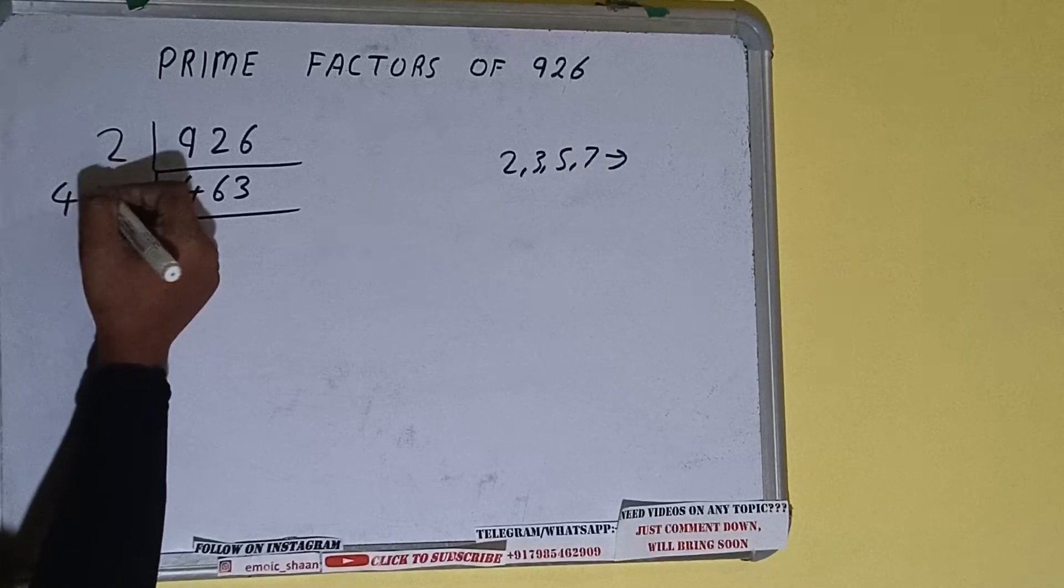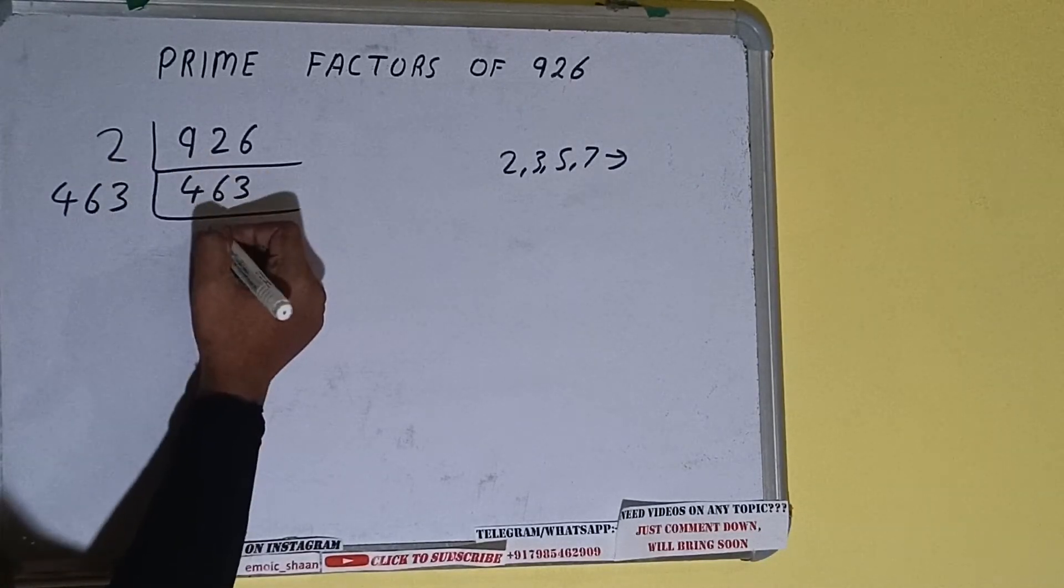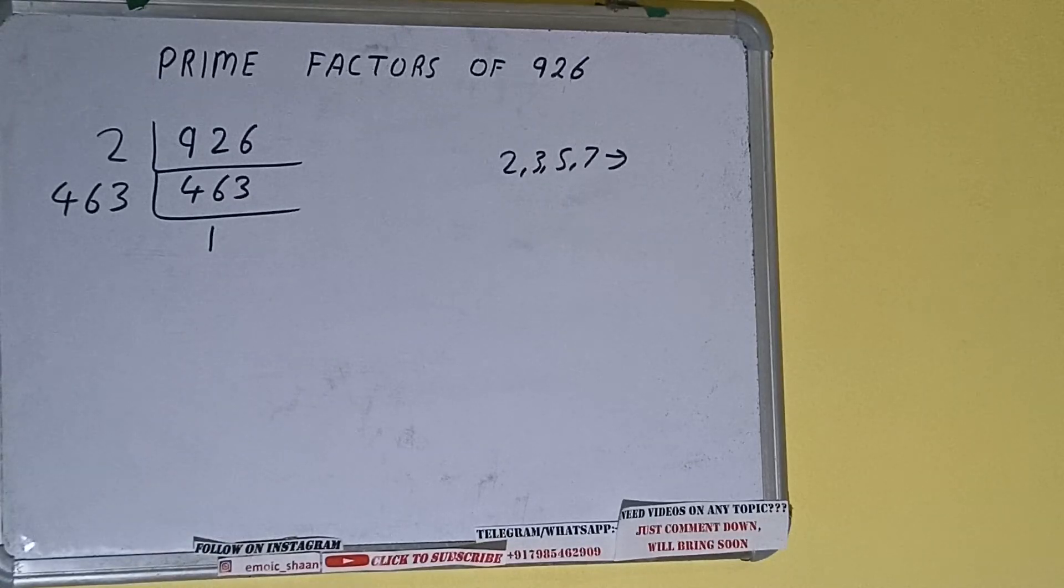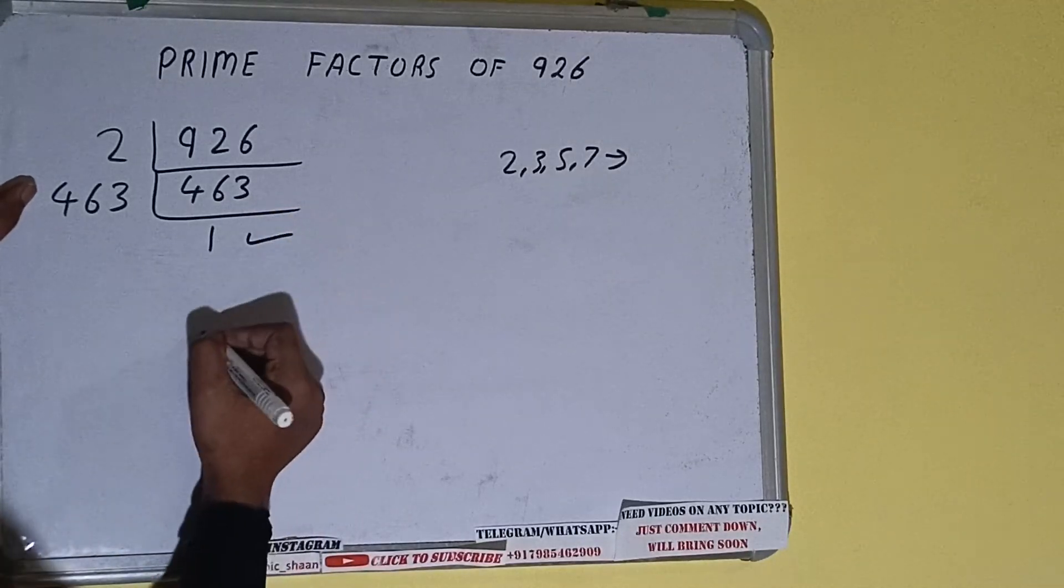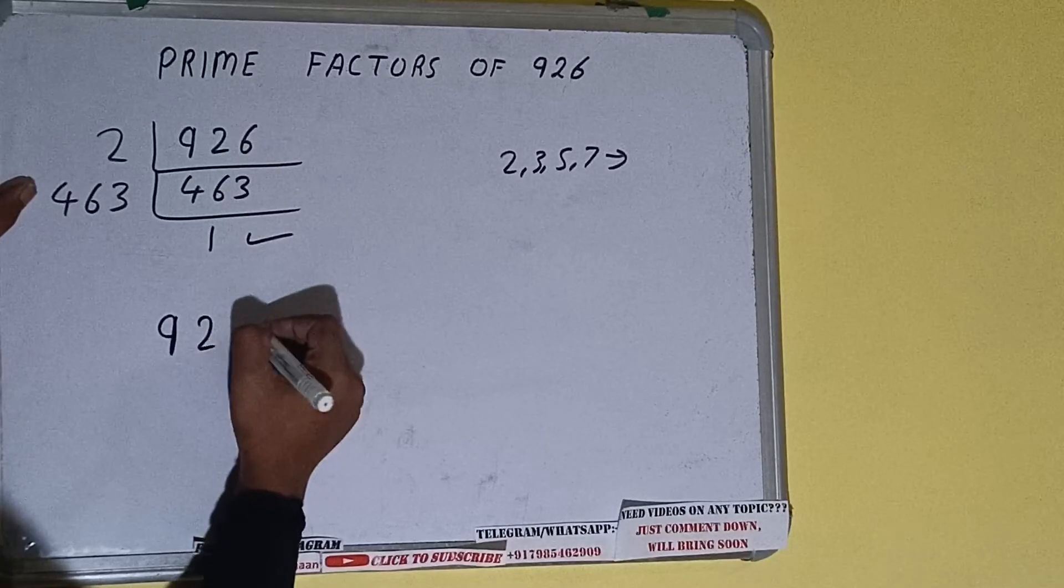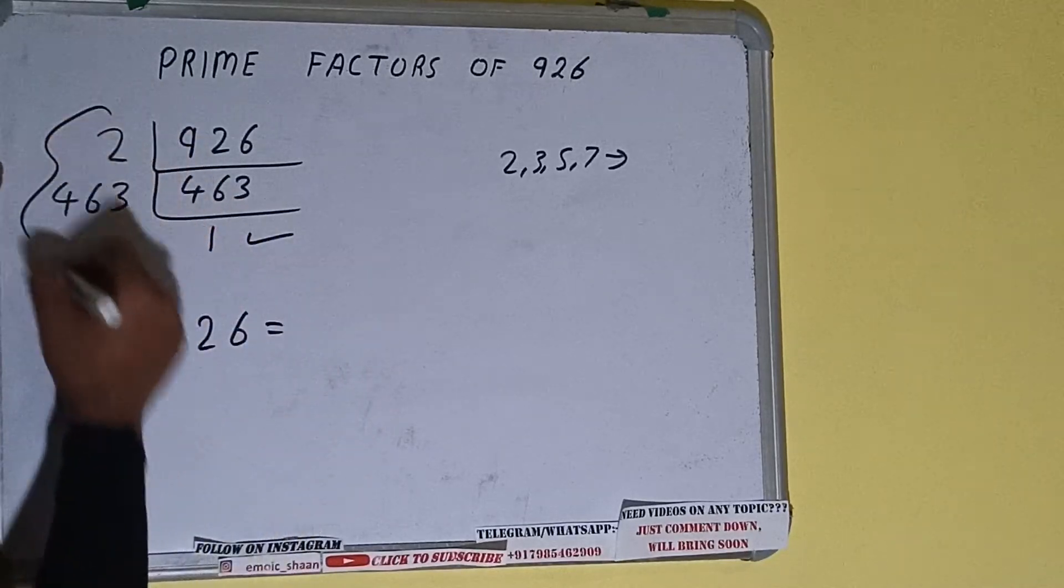Once we do so, we'll be getting 1. Once we get 1, we need to stop and do one last thing. That is, prime factors of 926 equals multiply whatever we have on the left-hand side, that is 2 times 463. That will be the answer.